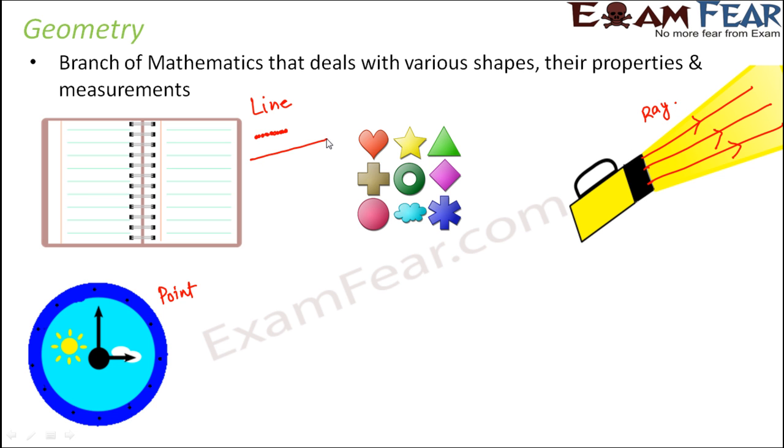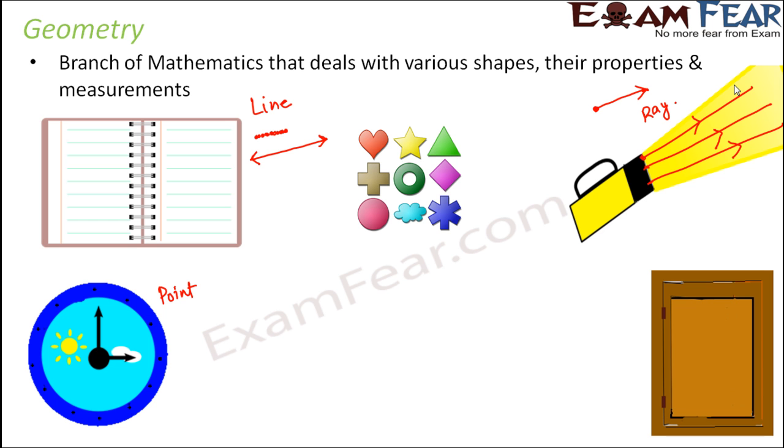So basically when we talk about line, it is a straight combination of points which extends in both directions. When you talk about ray, it has a fixed endpoint at one end and the other end continues indefinitely. Like here, the source is fixed, so this end is fixed but the other end keeps on going indefinitely. So that's a line and a ray.